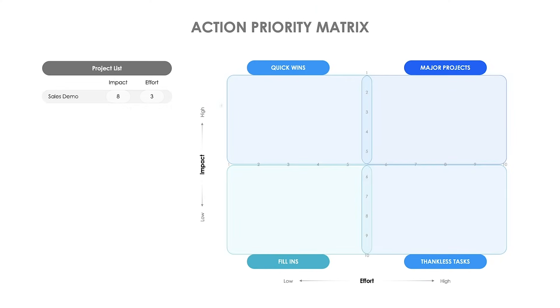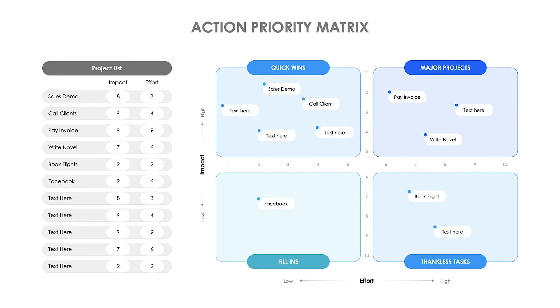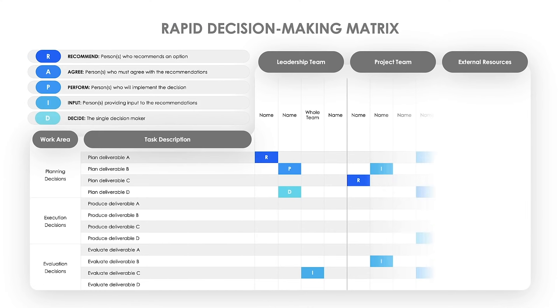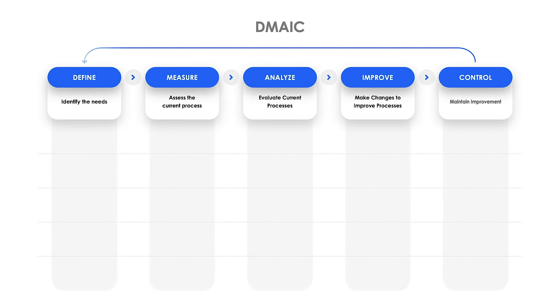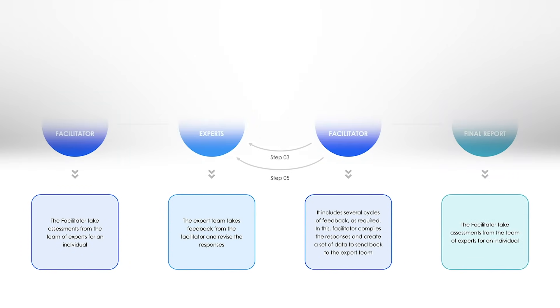For more on decision-making models like Action Priority Matrix, OODA Loop, Rapid Matrix, DMAIC, or Delphi Method that you can download and customize with your own data, check out the link in the description. Thanks for watching, and if you enjoyed this video, you can have access to other business frameworks and book summaries — just check the link in the description to learn more.